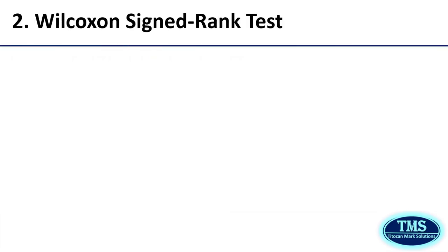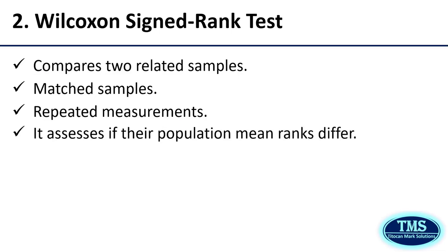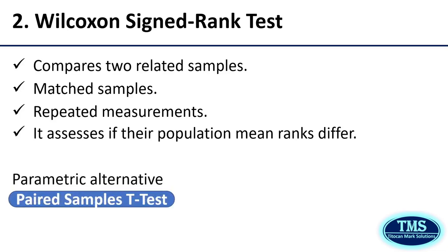Second, the Wilcoxon Signed-Rank test. This test is a non-parametric statistical test used to compare two related samples, matched samples, or repeated measurements on a single sample to assess whether their population mean ranks differ. The parametric alternative is the paired sample T-test. You are expected to consider performing a Wilcoxon Signed-Rank test if and only if the parametric assumptions of the paired sample T-test are not satisfied or are violated by your data. This test is useful when dealing with small sample sizes or ordinal data and provides a robust method for analyzing paired differences without relying on the assumption of normality.